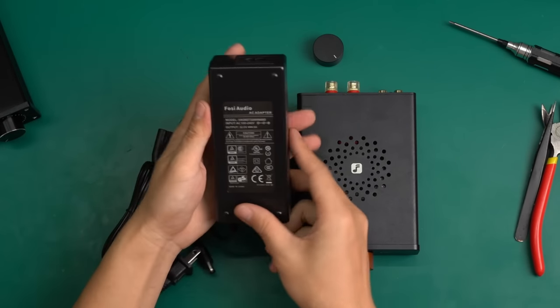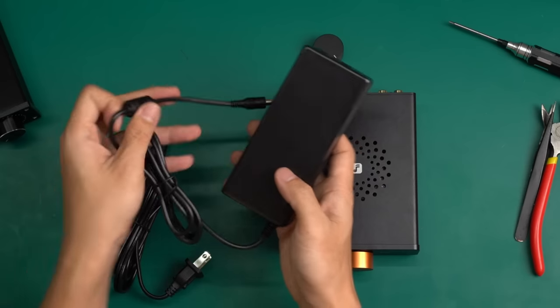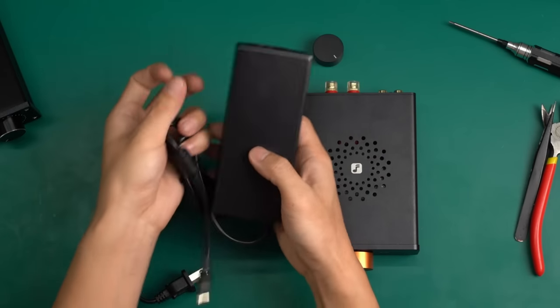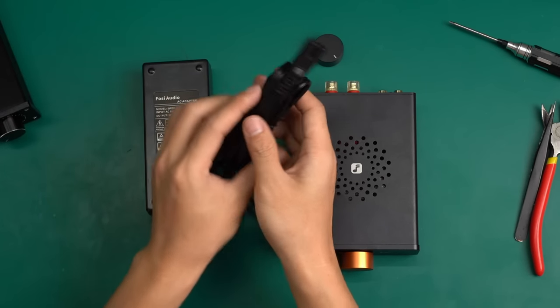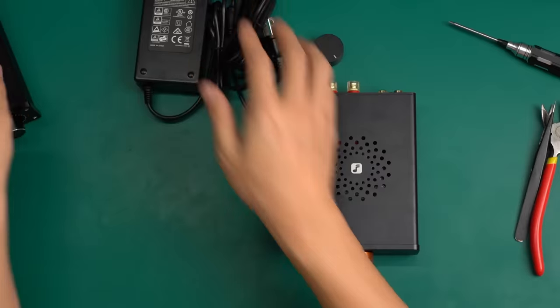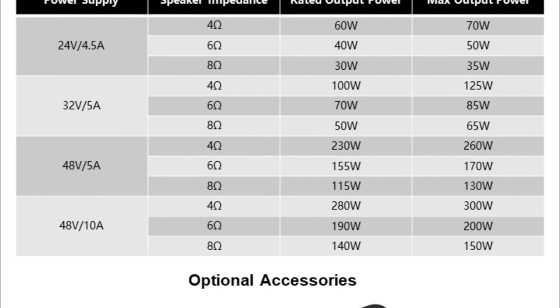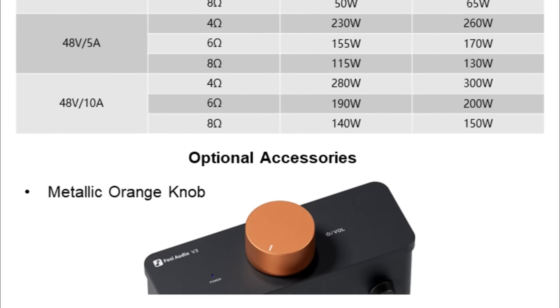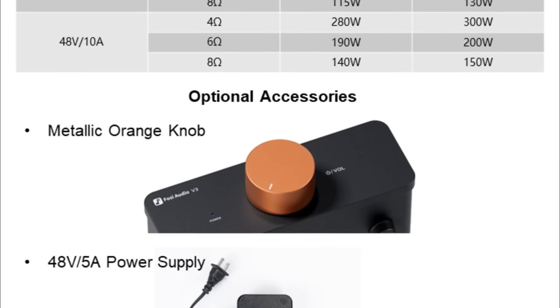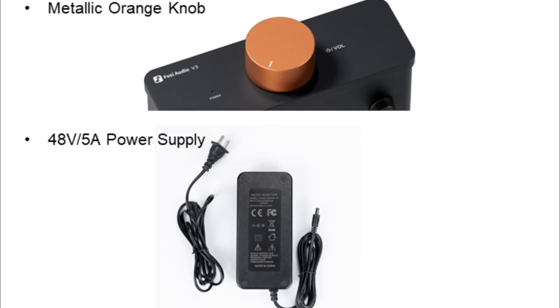In terms of power supply, this amplifier comes standard with a 32V 5A power brick. According to the data provided by Fossi Audio, this power supply can deliver an RMS power of up to 100W when driving a 4 Ohm speaker. This should be more than enough for most bookshelf speakers. Fossi Audio also provides a 48V power brick option. If you want to use the V3 to drive larger bookshelf speakers and tower speakers, the 48V power supply would be a better choice.